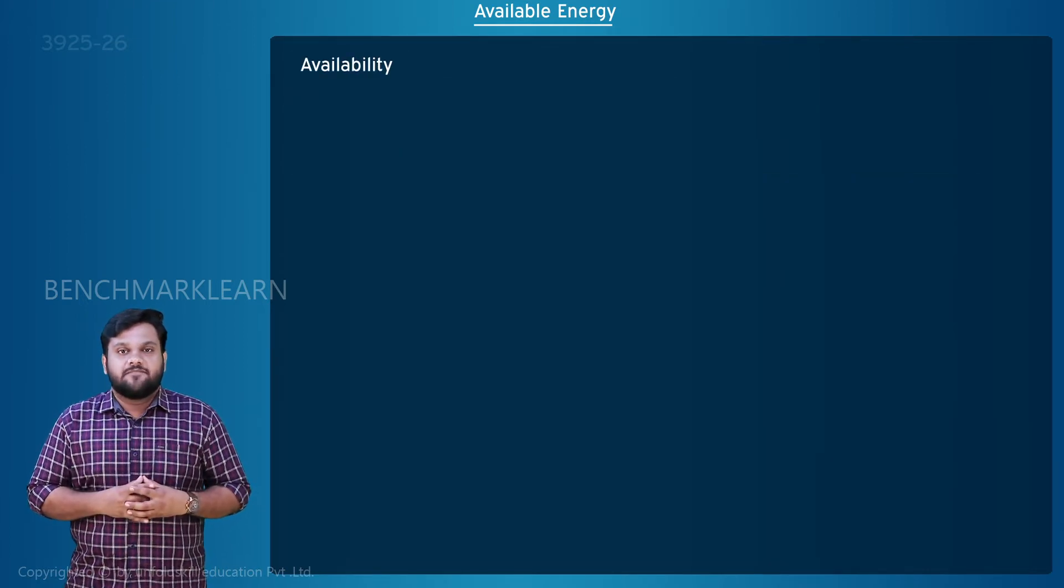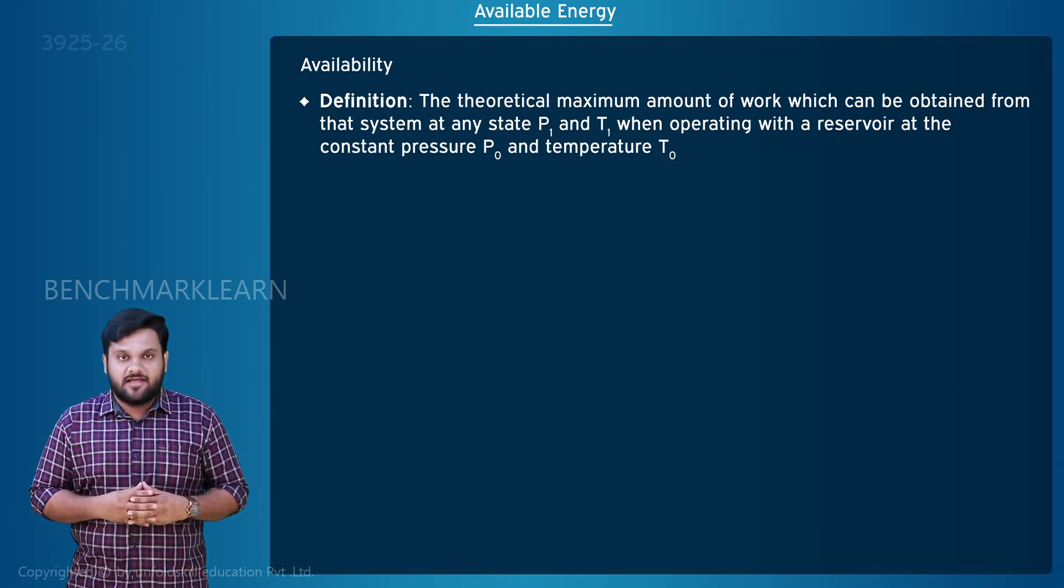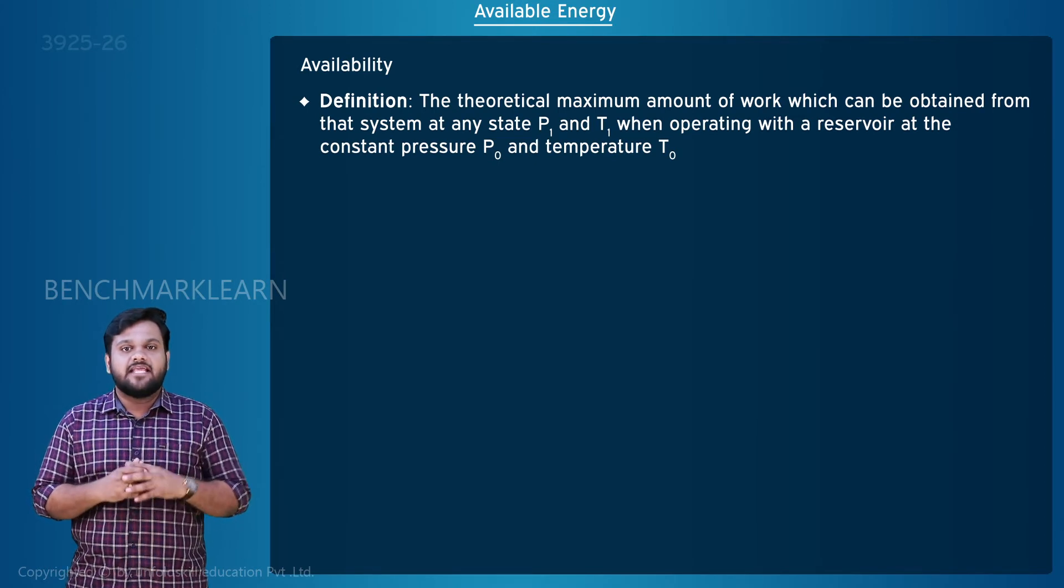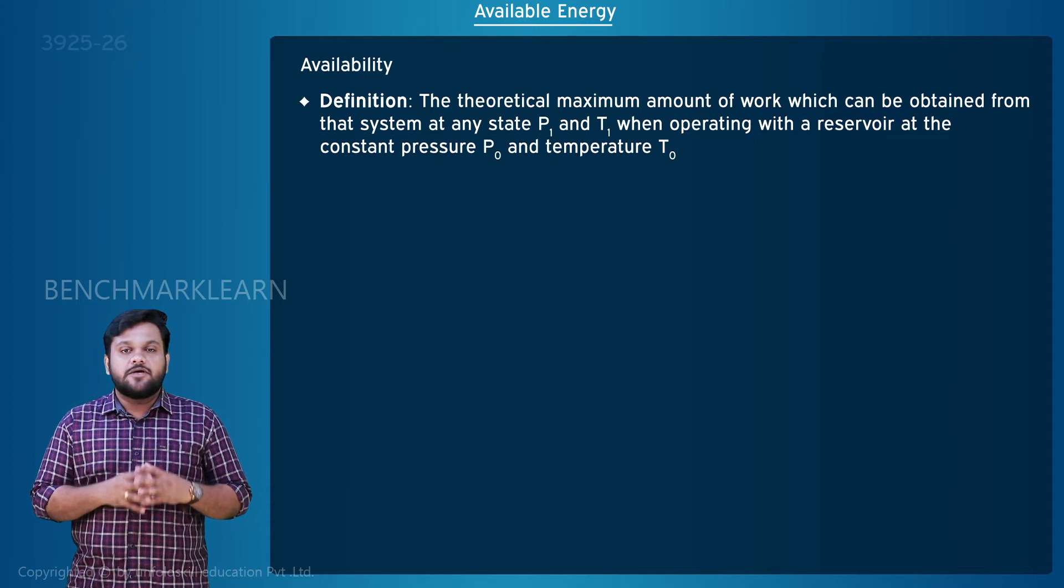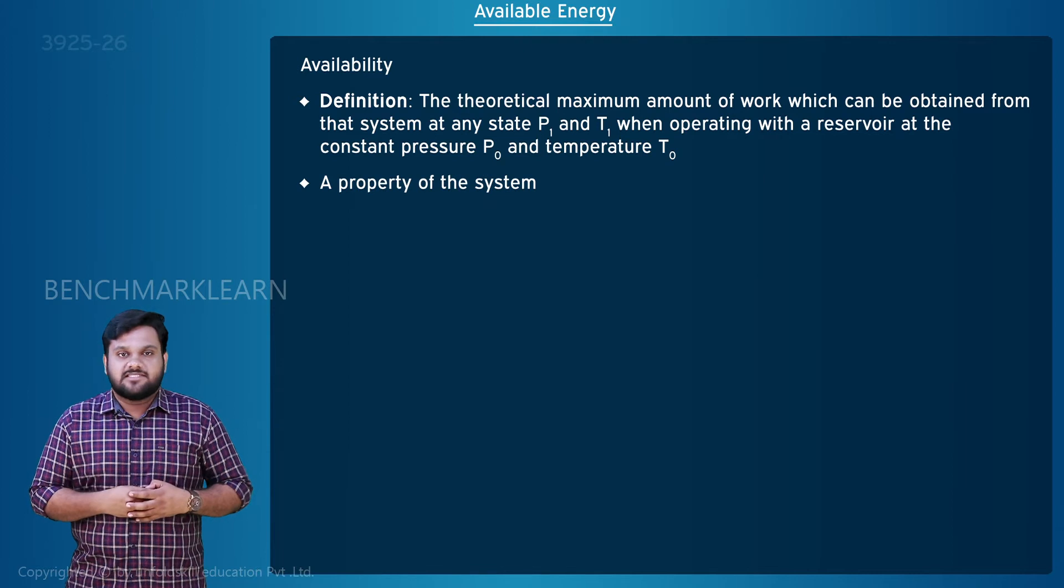Availability of a system can be defined as the theoretical maximum amount of work which can be obtained from that system at any state P1 and T1 when operating with a reservoir at constant pressure P0 and temperature T0. Availability is a property of the system.